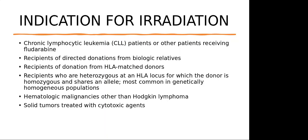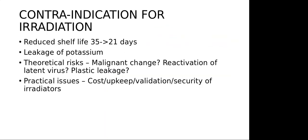Regarding contraindications and complications of blood product irradiation: the main issue is reduced shelf life. For red blood cells, the normal shelf life of 35 days is reduced to 21 days after irradiation.